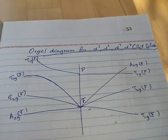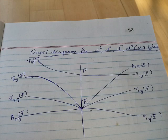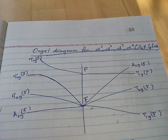Hello. In the last class we noticed the Orgel diagram for D1, D6, D4, and D9 octahedral and tetrahedral field.